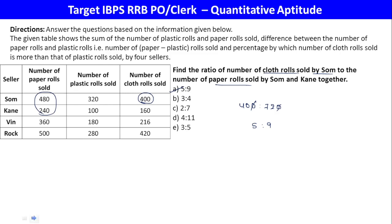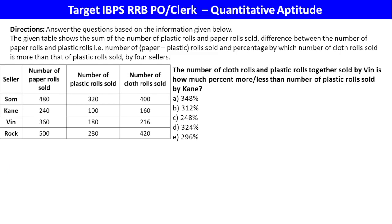Next question: Find the number of cloth rolls and plastic rolls sold by Wipin. Plastic and cloth together equals 300. 400 minus 4 equals 396. The percentage: 296 upon 100 into 100 equals 296%. Option E is the final answer for this question.